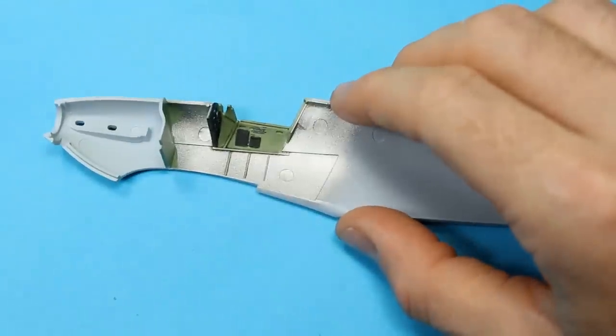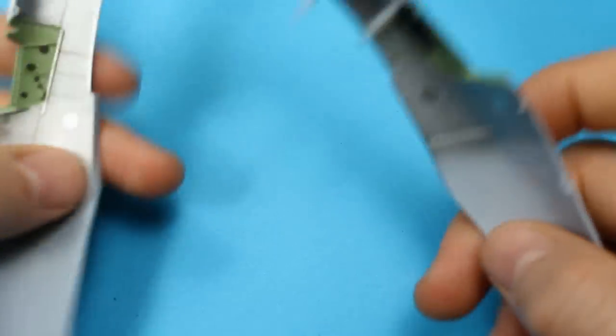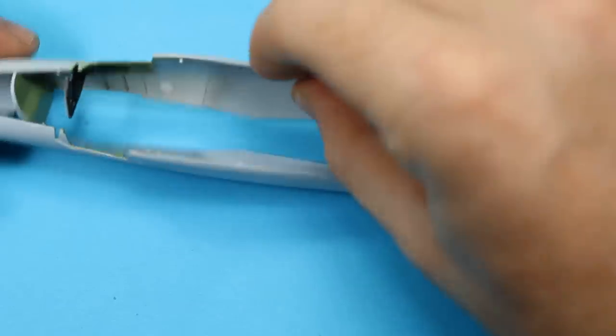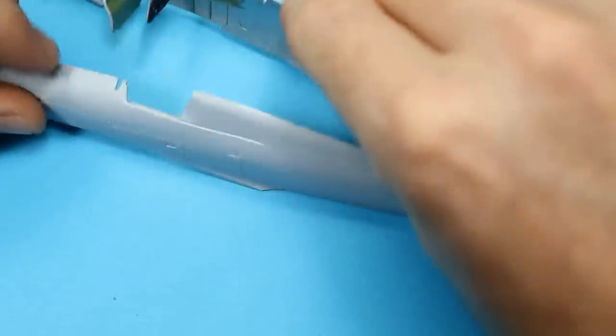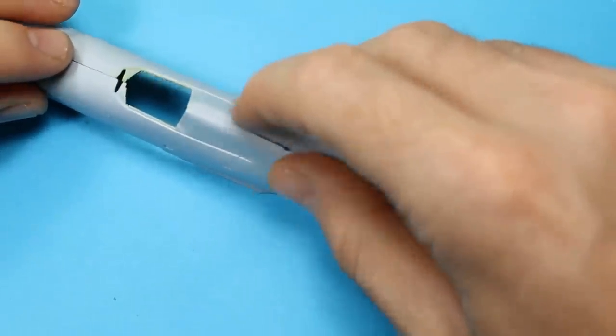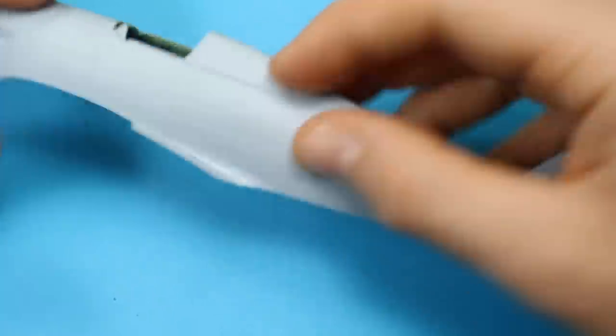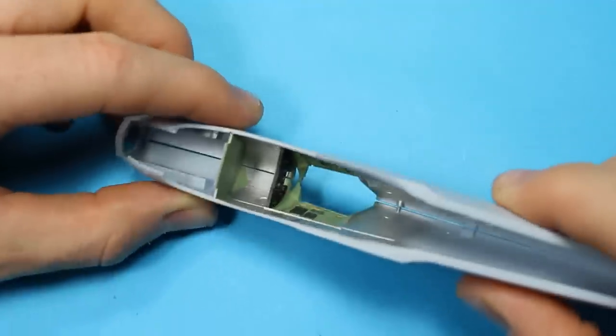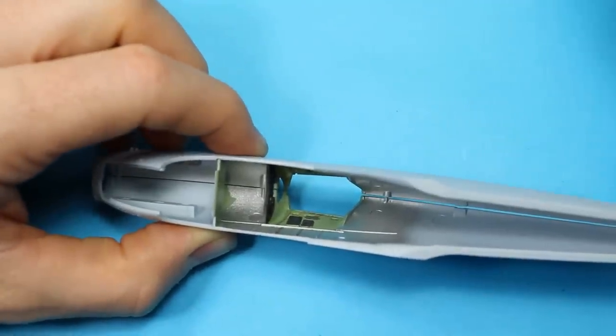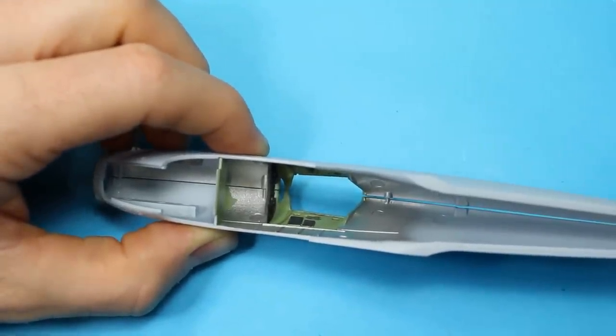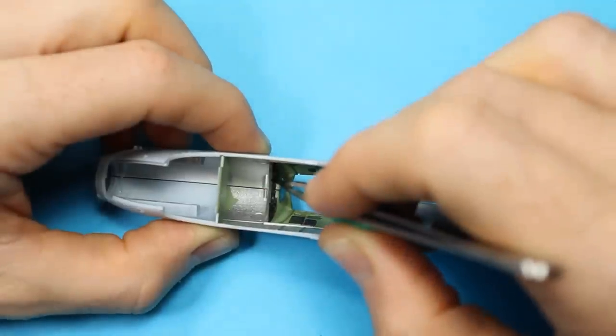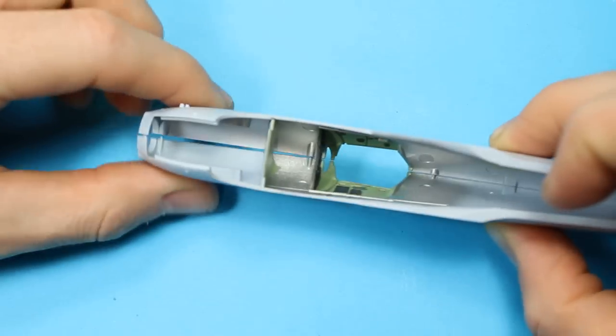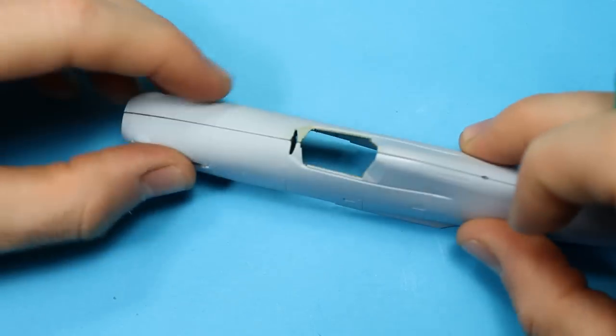Once these things are all glued in, I've been test fitting throughout, making sure they're in the right position. We can glue up the fuselage. I like to have it ready, and from the underside, while we've still got the glue setting on the instrument panel, I just maneuver it so it's in line and where it needs to be.